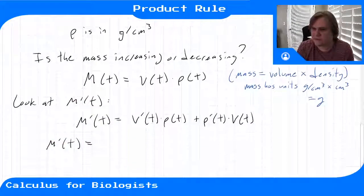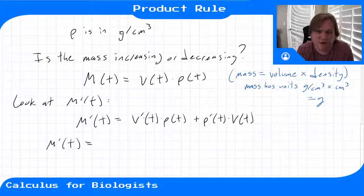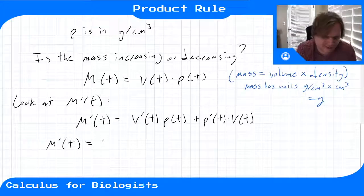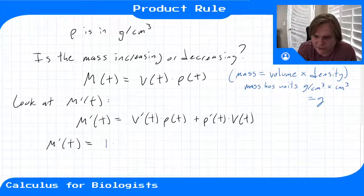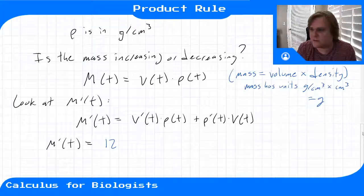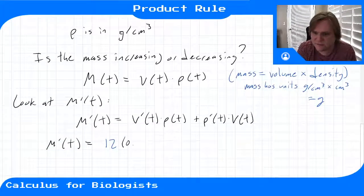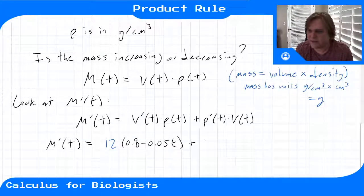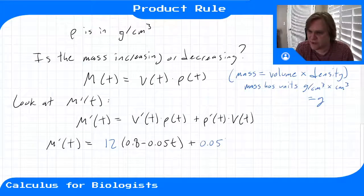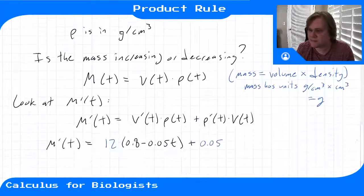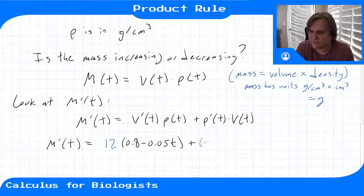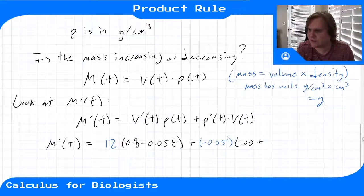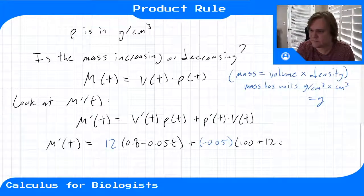So then if we look at our function, volume derivative times rho plus rho derivative times volume. Let's write this out. The volume derivative is 12, and rho gives us 0.8 minus 0.05t. And then the second part, negative 0.05 times the volume function, which is 100 plus 12t.